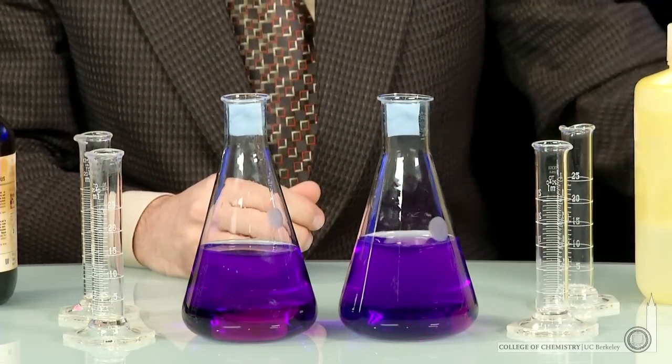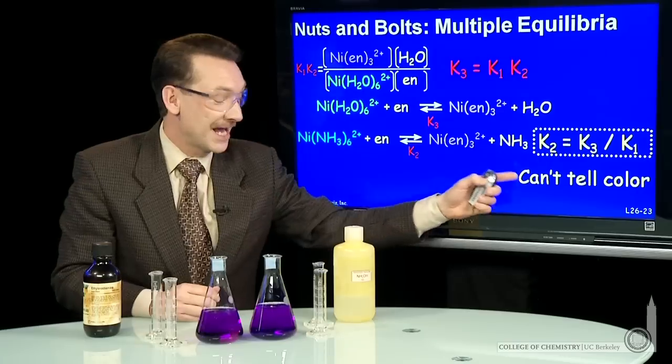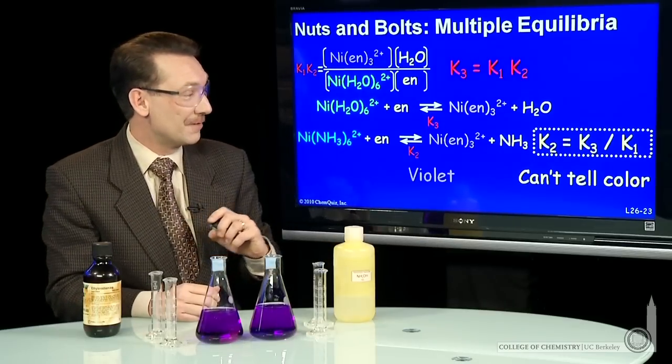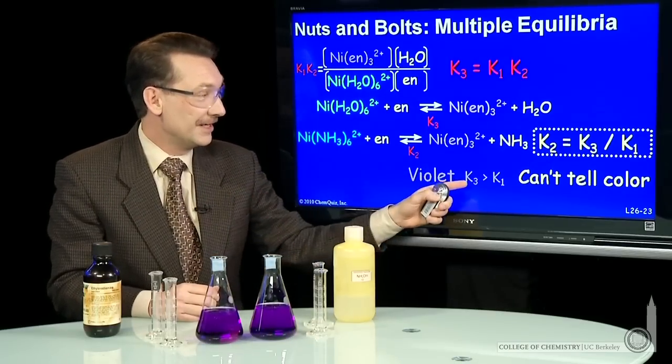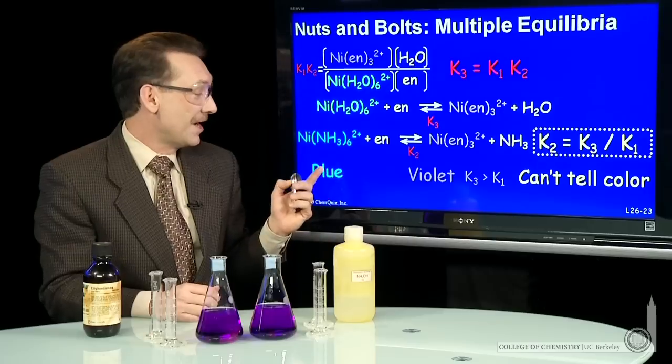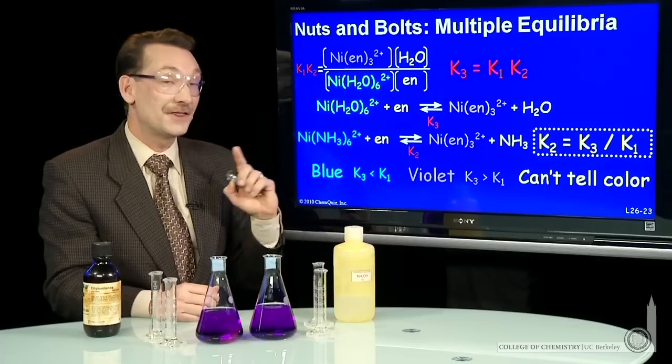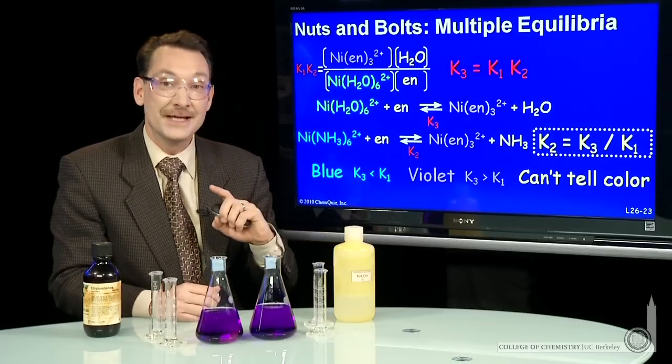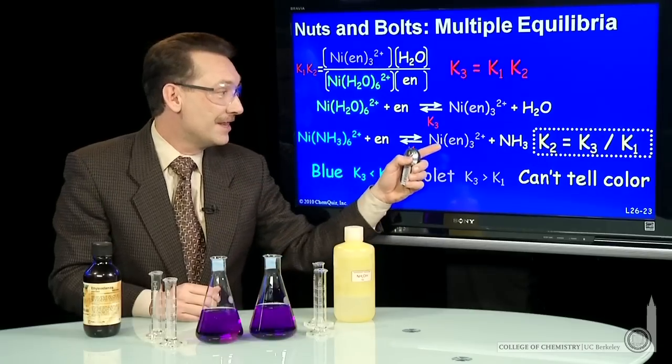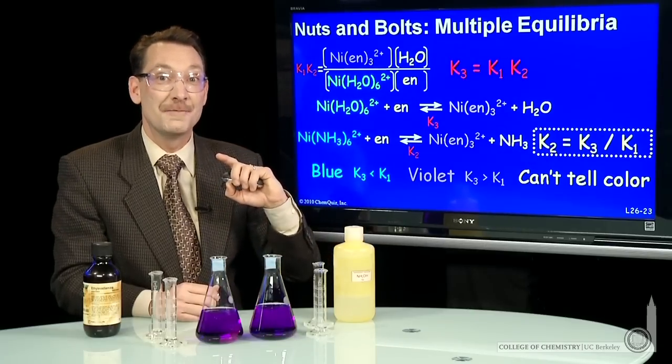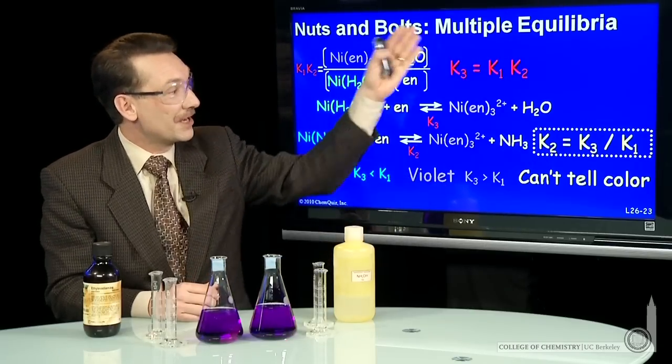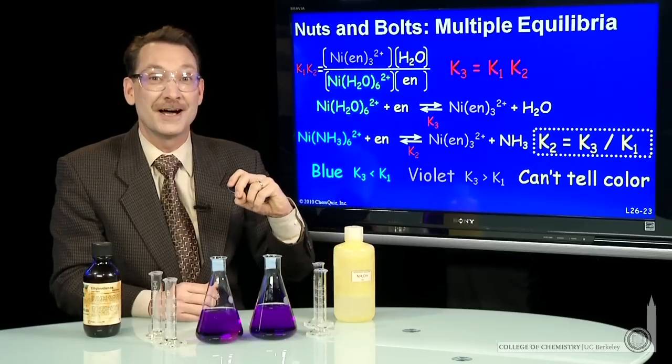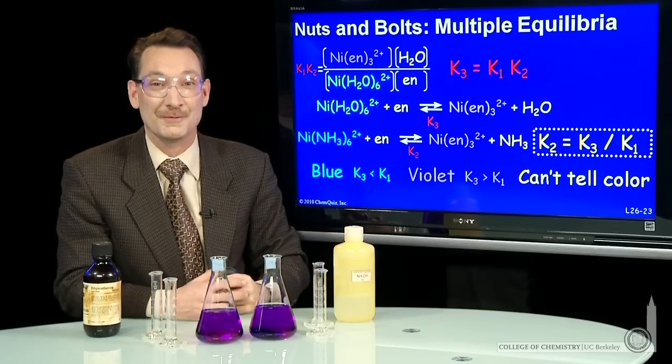What we found is we can't tell the color unless we do the experiment. It will be violet if K3 is bigger. It would be blue if K3 was smaller. But we've shown K3 is bigger. Ethylenediamine is the stronger binding ligand. This is an analysis of equilibrium constants in multiple equilibria.